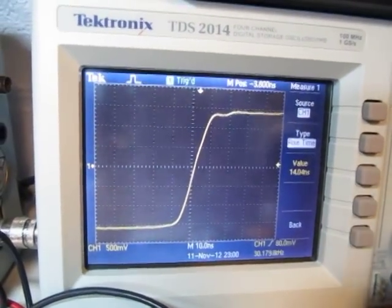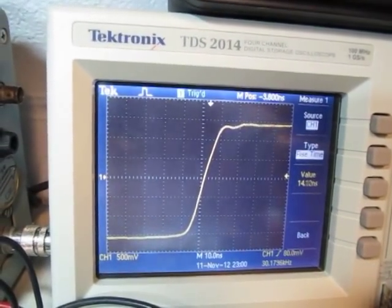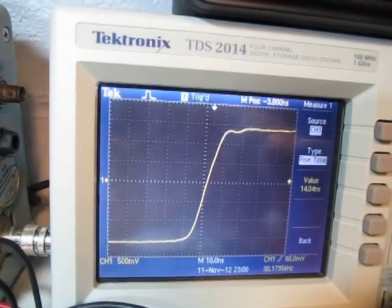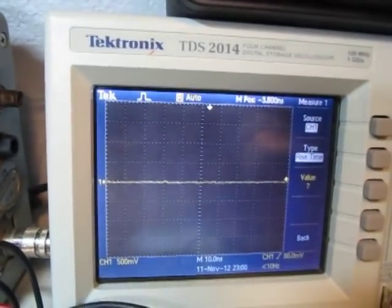Now back before digital scopes, we had another method of making these measurements. What we did is we took advantage of some markings on the graticule that you may have seen but never really paid much attention to on an old analog scope. So let's go take a look at that.